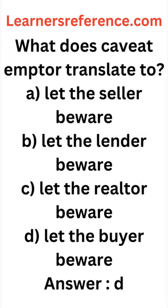What does caveat emptor translate to? Option A: let the seller beware. Option B: let the lender beware. Option C: let the realtor beware. Option D: let the buyer beware.